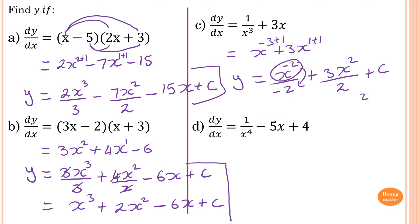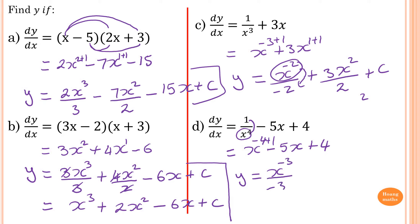First of all, we need to move the x to the power of 4 up first. So it becomes x to the — move this up — so it becomes a negative index, which is minus 4. And minus 5x, and then plus 4. Now we can integrate this. So y is equal to — you add 1 to this, so minus 4 plus 1, so x to the minus 3. Of course, you need to divide by negative 3, minus 5x — because x is x plus 1, you add 1 to this, so which is 2. And divide by 2, and add 4x — don't forget, 4x is 4x to the power of 0, so you add 1 to this, so it's 1. And then plus a constant.